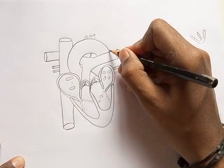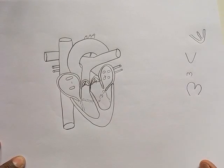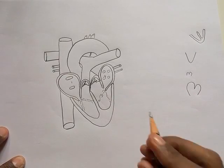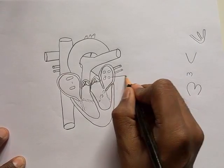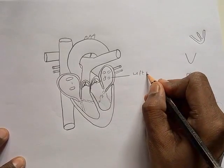So like this you can draw the internal structure of heart within short span of time. And what we need to understand is the labeling part. So let's try and understand the labeling. This part is called left atrium.